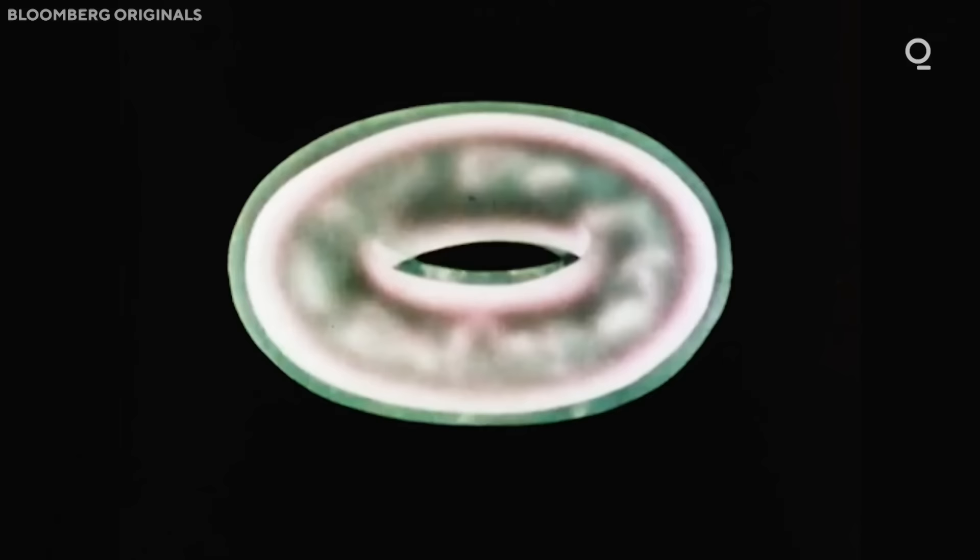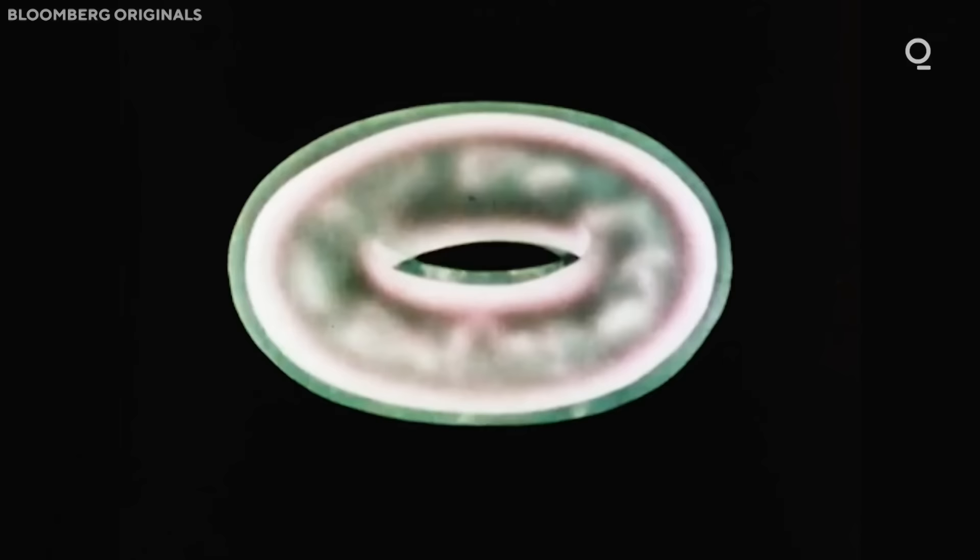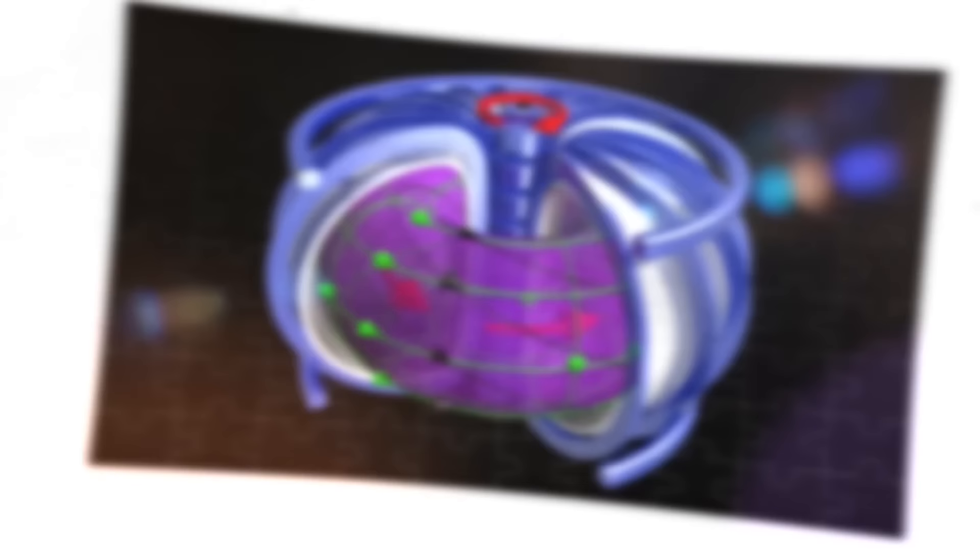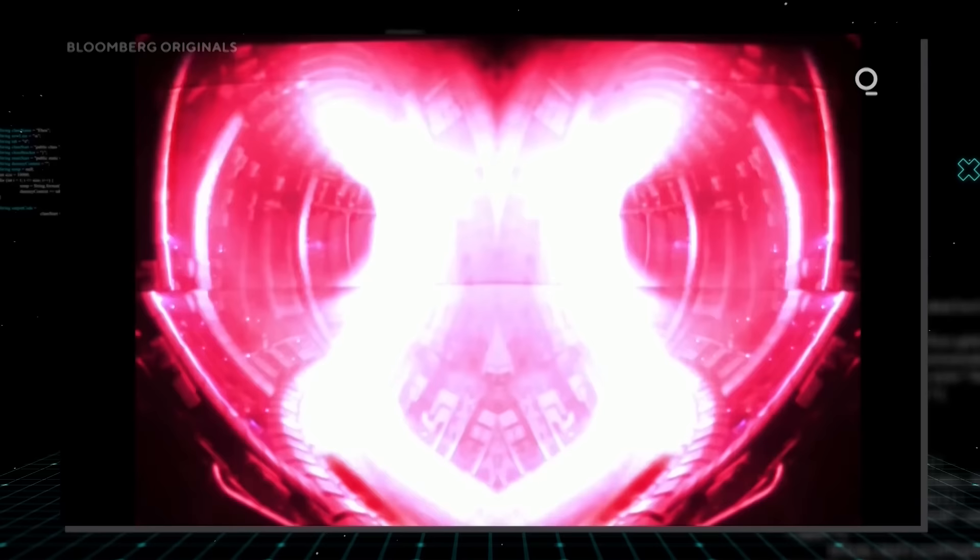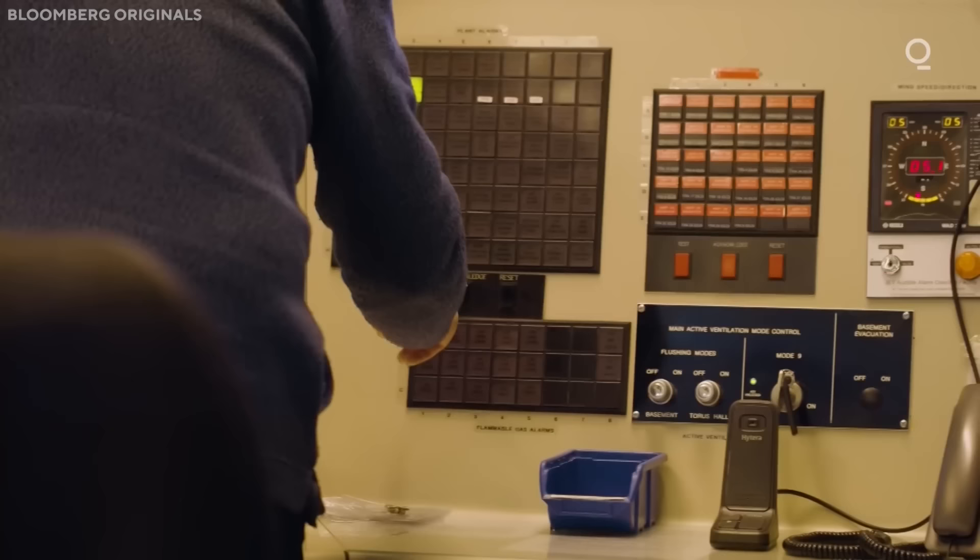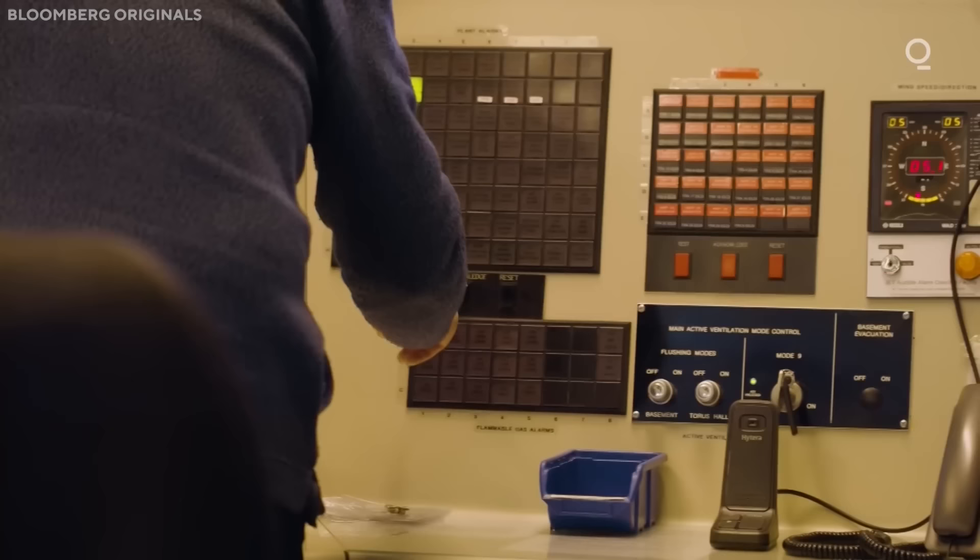Nuclear fusion reactors work by creating and sustaining the extreme conditions needed for fusion to occur, and by harnessing the energy produced by the fusion reactions. They use magnetic confinement to trap and shape the plasma, which is heated by various methods to reach high temperatures and densities. They also use lithium blankets to absorb the fusion neutrons and breed more tritium fuel. Nuclear fusion reactors have the potential to provide clean, abundant, and safe energy for humanity and to revolutionize the world's energy landscape.